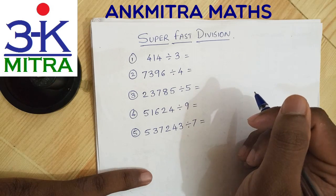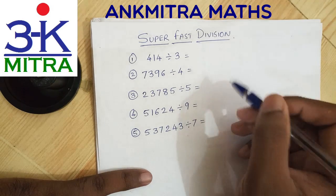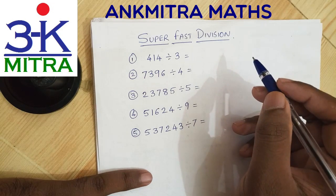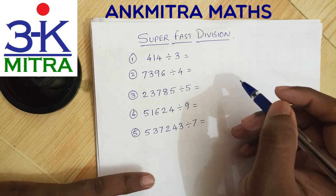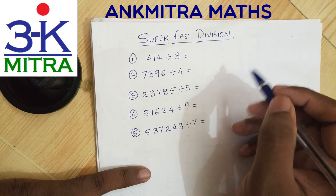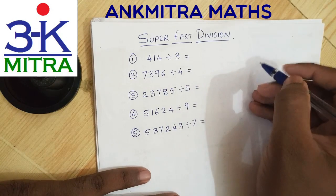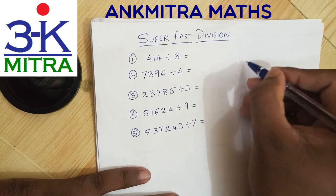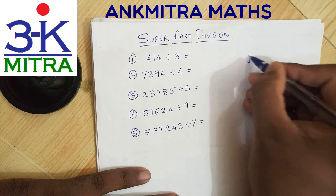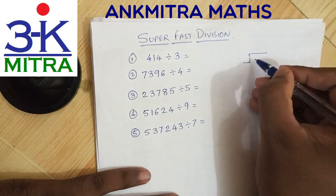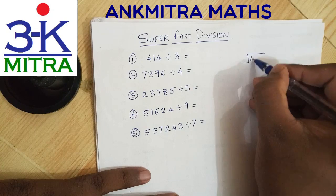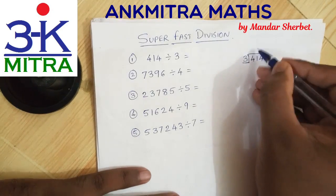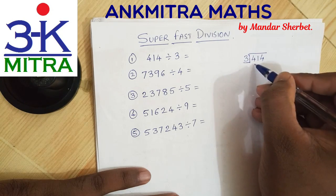Hello everyone. We all know that most kids in class 5 or 6 are still in the habit of doing division in the standard format — that is what they are taught in school initially — for example, 414 divided by 3: they write it down in the long division format and start the division procedure, writing the quotient each time.